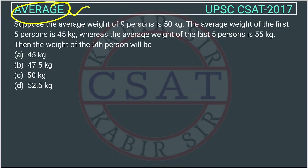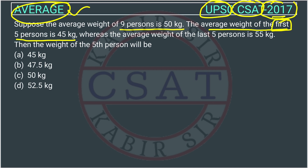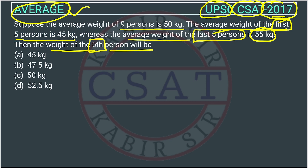This is a question on averages asked in the UPSC CSAT paper of 2017. Suppose the average weight of nine persons is 50 kg, the average weight of the first five persons is 45 kg, whereas the average weight of the last five persons is 55 kg. Then the weight of the fifth person will be? So what is given — there are nine people: person 1, person 2, person 3, person 4, person 5...